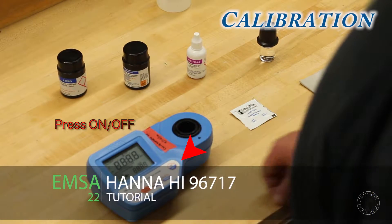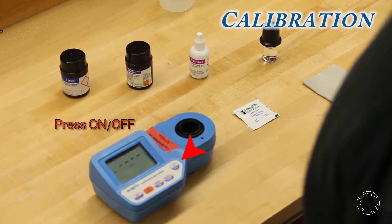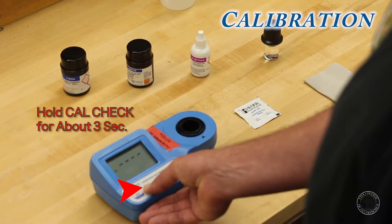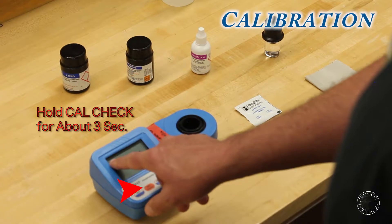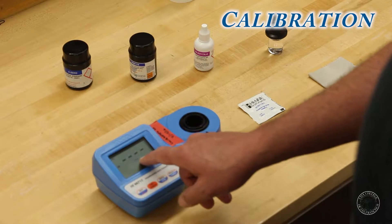We'll start by turning it on. And then to enter calibration mode, you'll just hold the CalCheck button for approximately three seconds. Then you'll see that the calibration mode has been enabled. Now the machine wants to be zeroed.